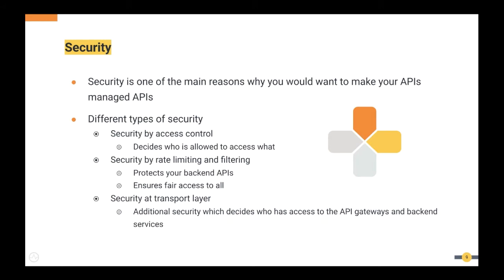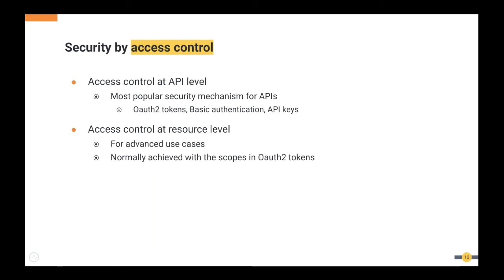Security by access control determines who is allowed to access which API. This is most commonly done using OAuth tokens, basic authentication, or API keys. Of those three, OAuth tokens are the most powerful because of their capabilities — they allow you to do other things as well, which leads us to access control at the resource level of your APIs.